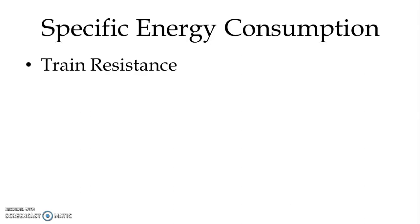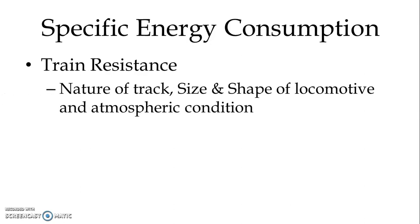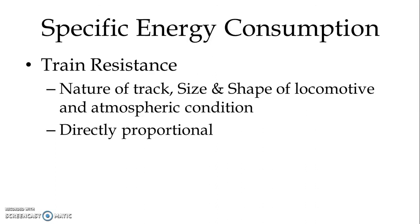The fifth factor is train resistance. The nature of the track, size and shape of the locomotive, and atmospheric conditions define the train resistance. If the train resistance offered to the train is higher, the requirement of specific energy consumption is more, and vice versa. So specific energy consumption is directly proportional to the train resistance.